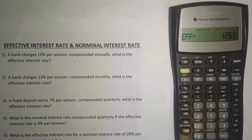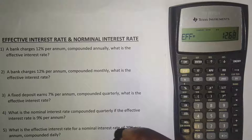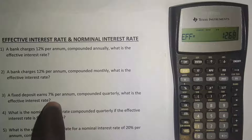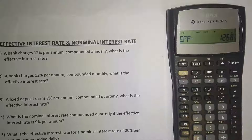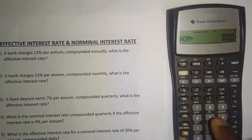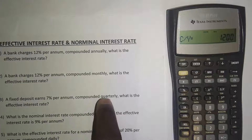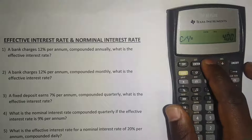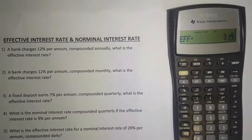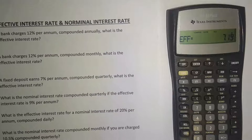For Example 3 — a fixed deposit earns 7 percent per annum compounded quarterly — the nominal interest rate is 7 percent. Clear your work, then enter 7 and press the upward button. Set the compounding to 4, since quarterly means four times per year, and press Enter. Press the upward arrow again and press CPT. The effective interest rate is 7.19 percent.